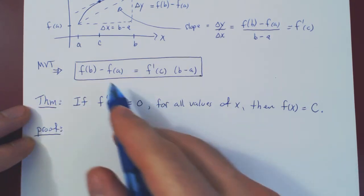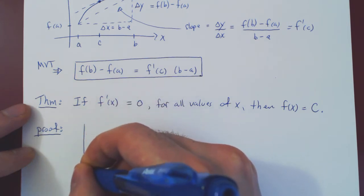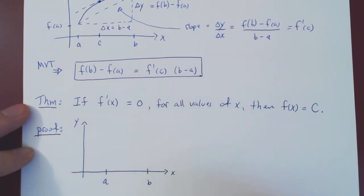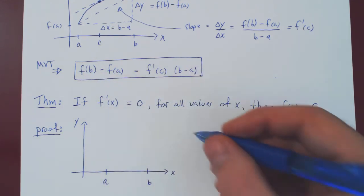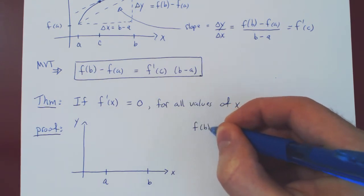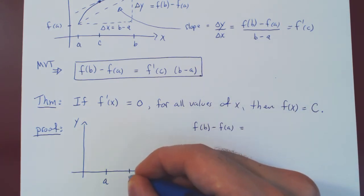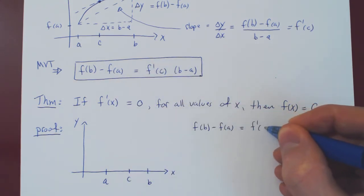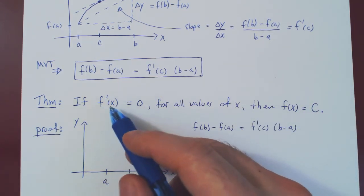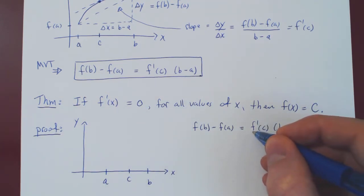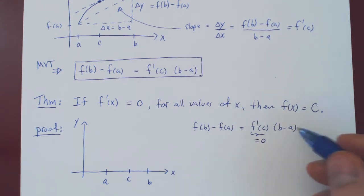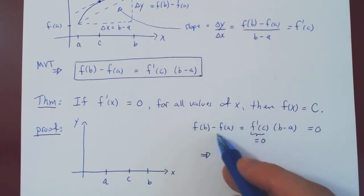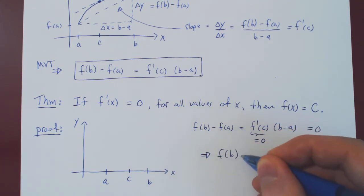Let's prove this very easily with the Mean Value Theorem. Suppose we look at just two values — the value at x equals a and the value at x equals b — and apply the Mean Value Theorem. We get f of b minus f of a equals f prime of c times b minus a for some c between a and b. But by assumption, the derivative is zero for any value of x, so f prime of c equals zero. Therefore f of b minus f of a equals zero.